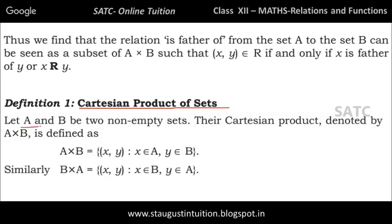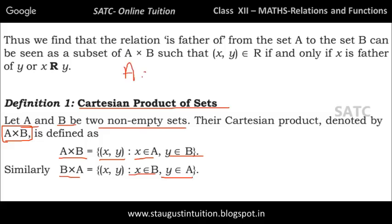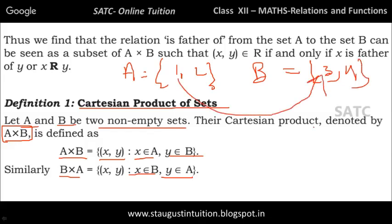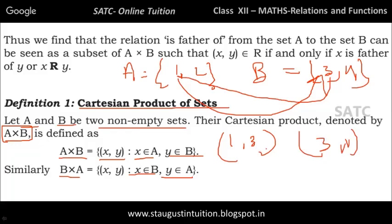The definition of the Cartesian product: Let A and B be two non-empty sets. Their Cartesian product, denoted A cross B, can be written as the set of ordered pairs (x, y) where x belongs to A and y belongs to B. Note that A cross B is not equal to B cross A in general: for example, (1,3) is not equal to (3,1).